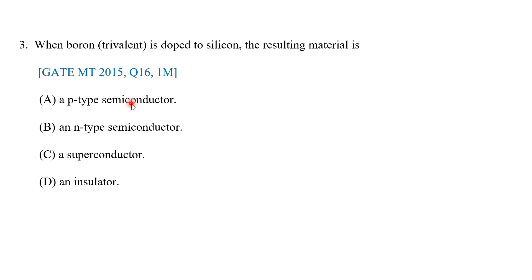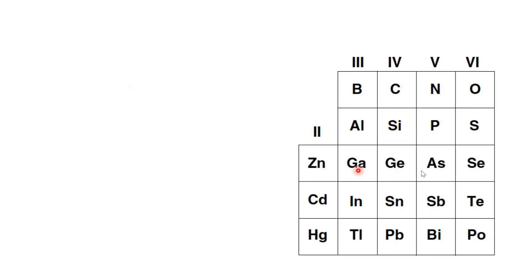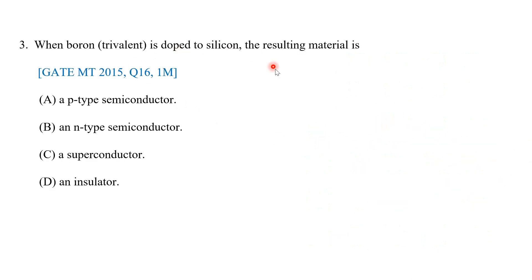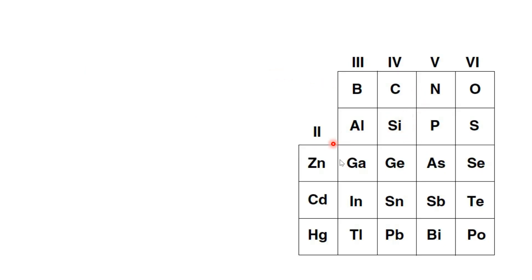Now let us go to the third question: when boron, a trivalent atom, is doped onto silicon, the resulting material is dash. This is a fairly direct question. I would suggest that material scientists know at least the first 20 elements in order, as it helps identify trends not only with semiconductors but with many other materials. Silicon is the intrinsic semiconductor in our question; whenever we dope silicon, it becomes an extrinsic semiconductor.